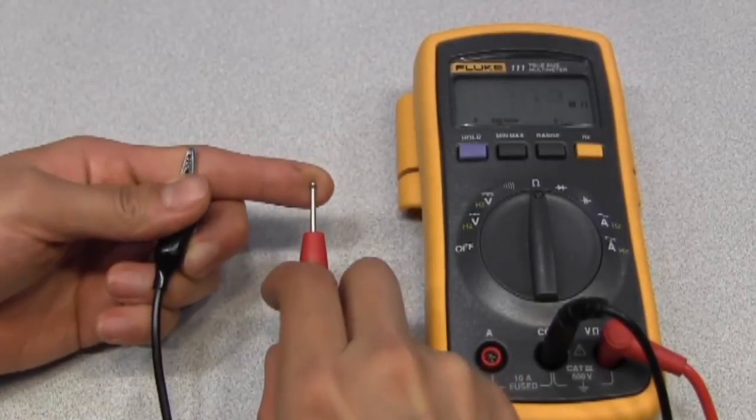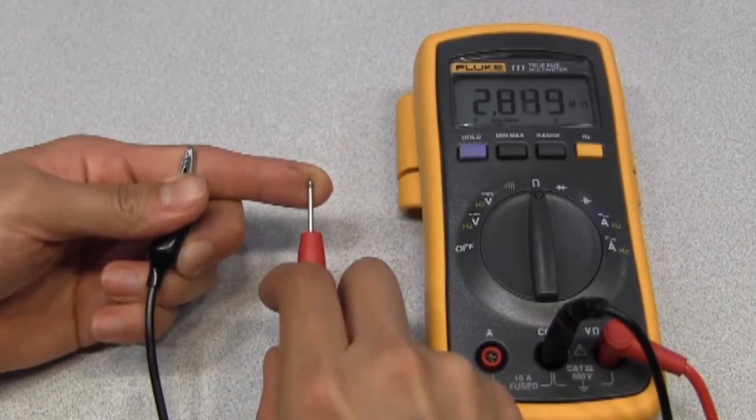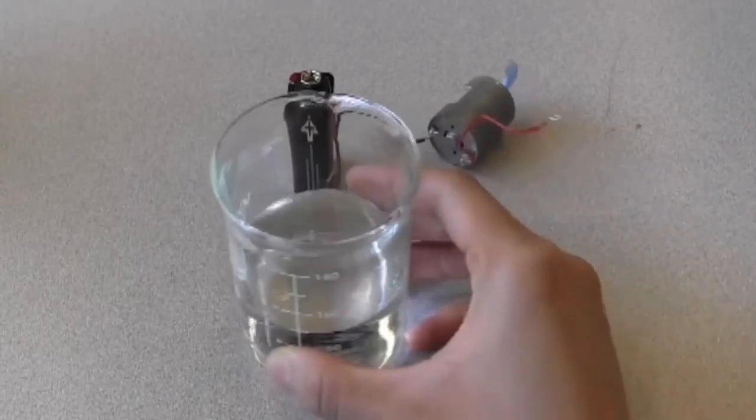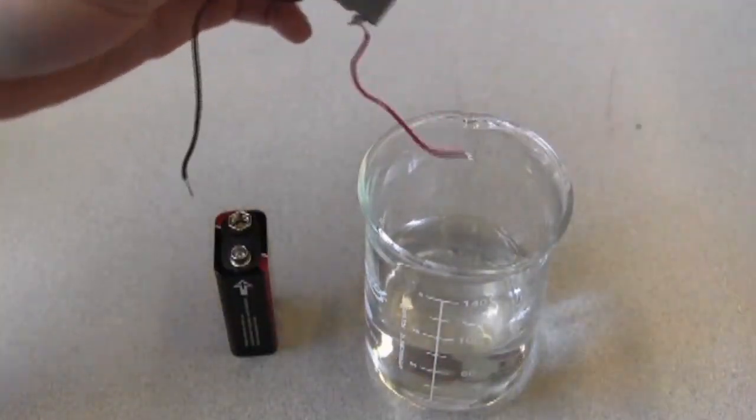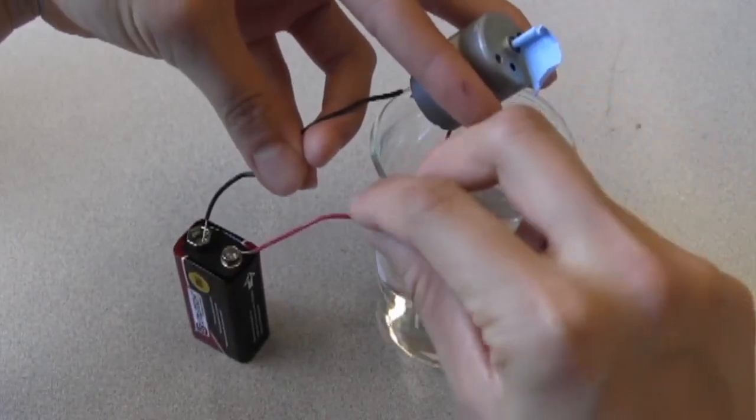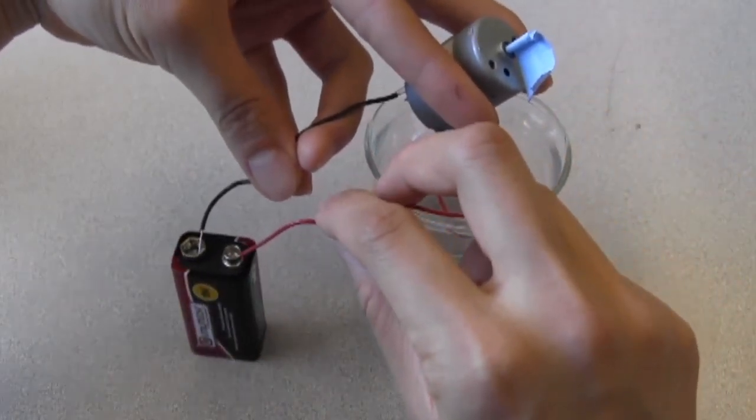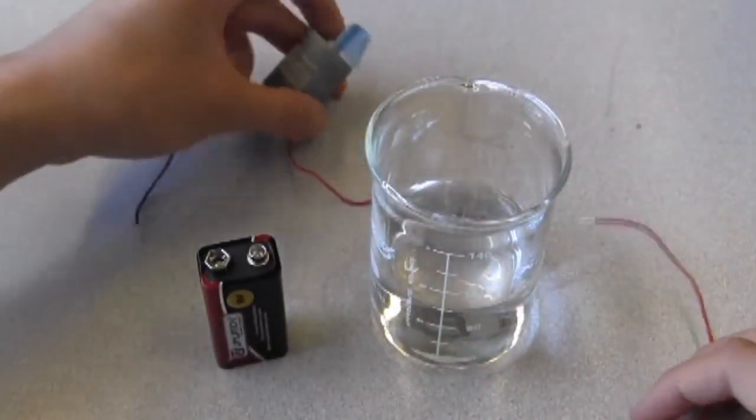We can also see that my finger has some measurable resistance. What about water? This is pure, deionized water that you get from a lab. If we try to make our circuit through the water, we see that nothing happens. Pure water isn't a very good conductor.